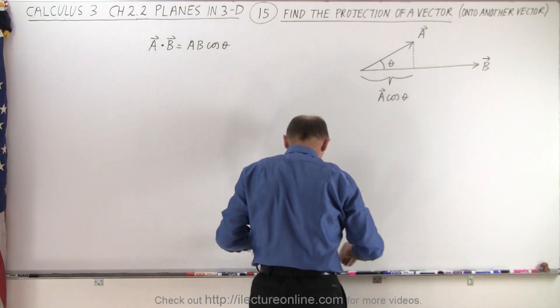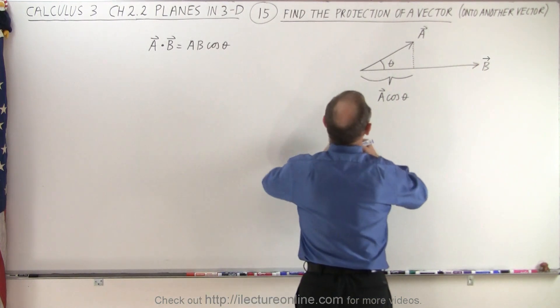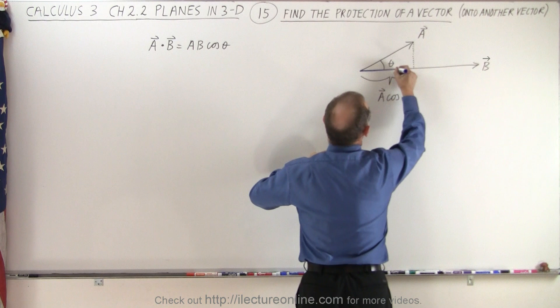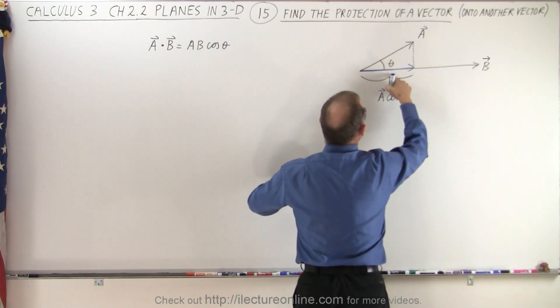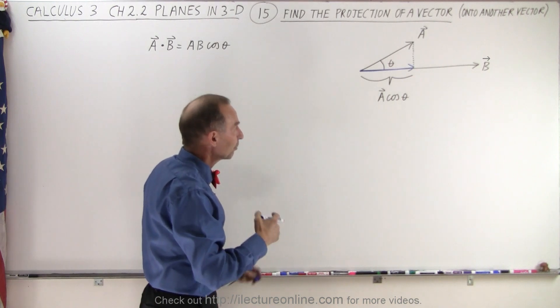So if you draw another vector, this here could then be considered the vector A times the cosine of theta. So that's the vector A projected onto vector B.